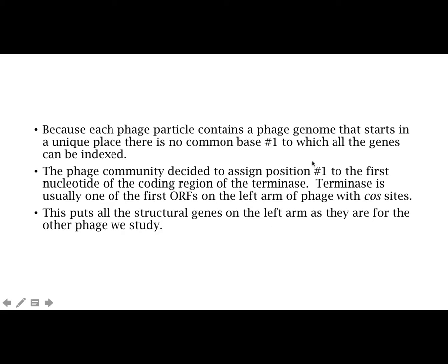Because each phage particle contains a genome that starts in a different place, there's no common base we can call number one as we do with phage that have cos sites. So the phage community decided to assign that position to the first nucleotide of the coding region of the terminase. The terminase is what's involved in packaging of the phage DNA and causing the final cleavage between each of the different genomes. The terminase is also on the very left arm — one of the first genes in phage that have cos sites — so that's why they chose that particular enzyme. The result is it puts all the structural genes on the left arm just as they are for other phage we study, with control genes on the right arm and replication genes in the middle. So the overall structure of the genome looks the same, but the actual structure in the phage particle is different. And that's all I'm going to say at the moment about circularly permuted genomes.